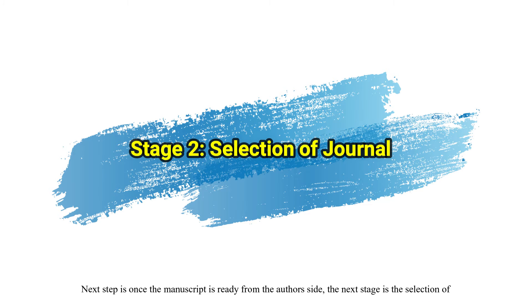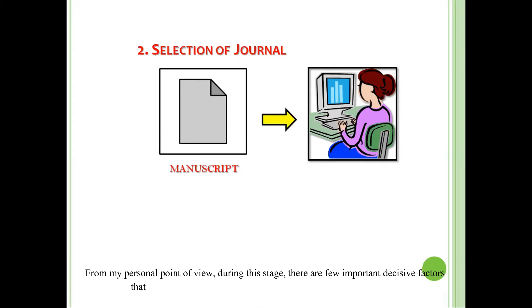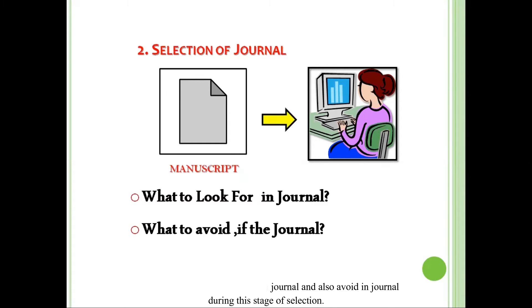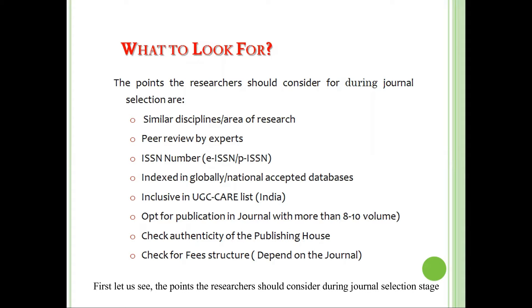Once the manuscript is ready, the next stage is the selection of the journal. Selection of a suitable journal for publication normally requires a lot of in-depth research. From my personal point of view, during this stage there are few important decisive factors that a researcher should look for and avoid in a journal.